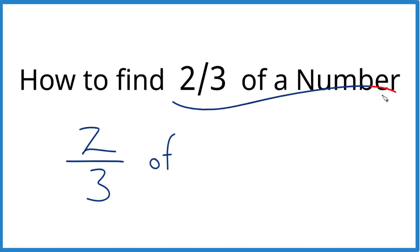Here's how you find two-thirds of a number. So we're going to take two-thirds of a number. Why don't we just say two-thirds of nine? So I'll show you two ways to do it.